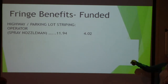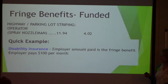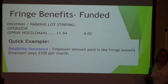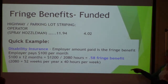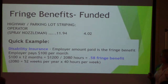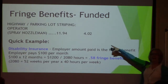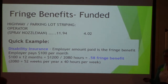Here's a quick example with Frank Nozzleman. The employer pays $100 per month toward disability insurance as a fringe benefit. That's $100 times 12 months equals $1,200. Divided by 2,080 annual hours, that gives $0.58 per hour as a fringe benefit. So the employer is offering $0.58 toward the fringe requirement. If that doesn't meet the full fringe amount, the employer might choose to pay the rest in cash or add more fringe benefits.